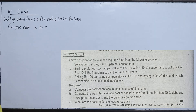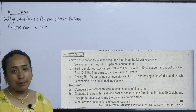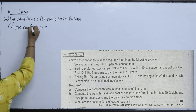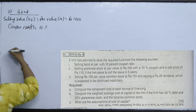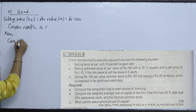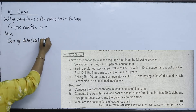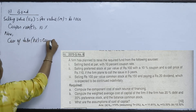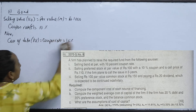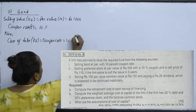What is the coupon rate value? The cost of debt uses the coupon rate. The coupon rate is 10%, so the cost of debt (KD) can be calculated as 10%.